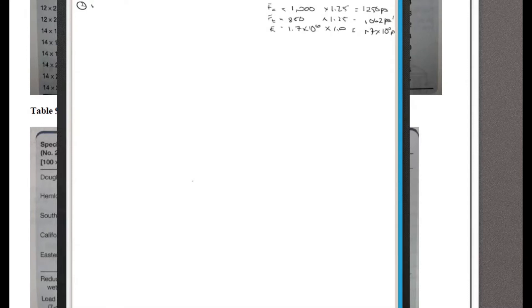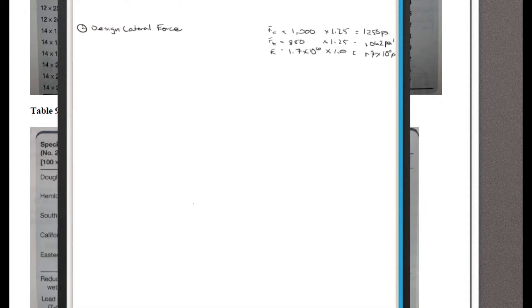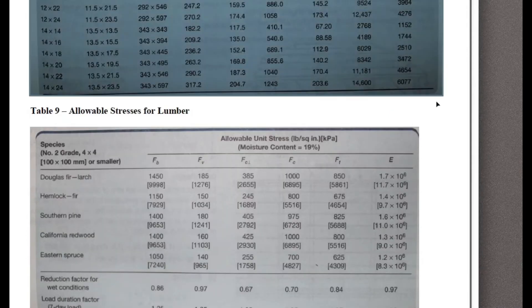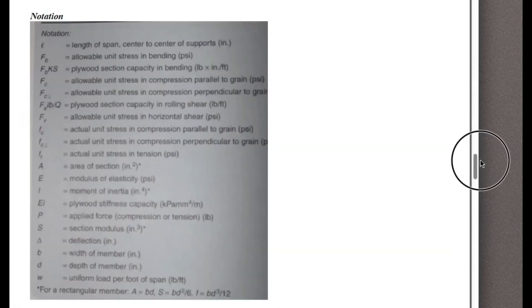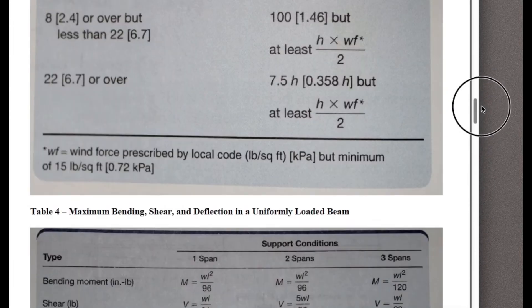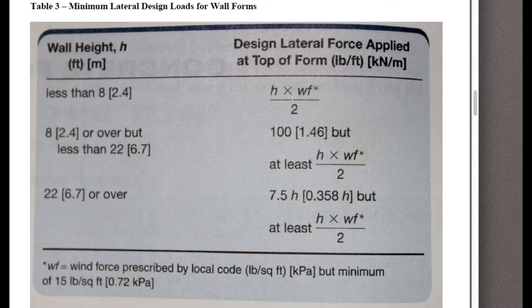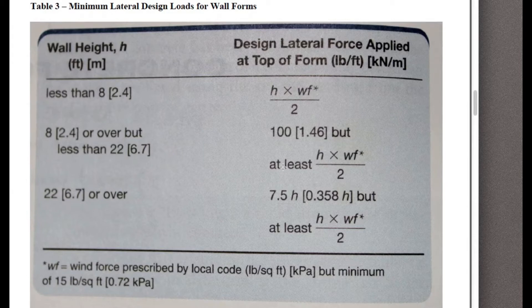Now we're going to multiply both of these by 1.25, and this one by 1.0 for the load duration factor. So we finally get 1250 psi, we get 1062 psi, and we get the same, 1.7 times 10 to the 6th psi. Now that we have that, let's jump into step one. We're going to find the design lateral force. The design lateral force is H, capital H, and that comes from your table here, table 3. So this is lateral design loads for wall forms.